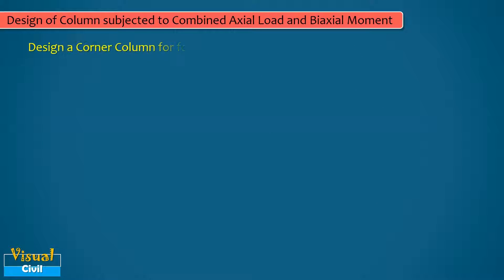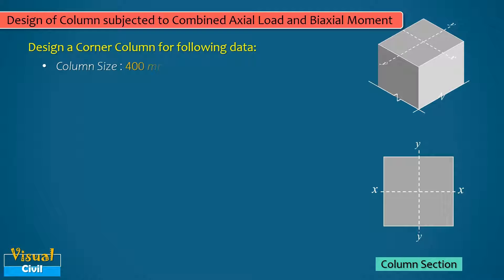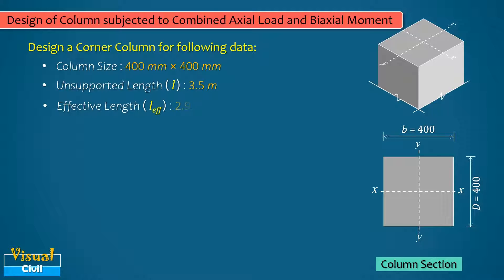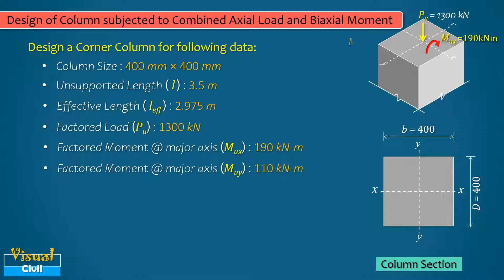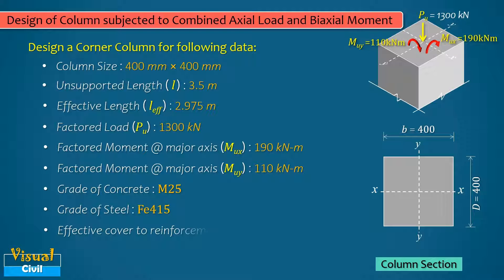Design a corner column of size 400 mm × 400 mm with an unsupported length of 3.5 m and effective length of 2.975 m. The column is subjected to a factored load of 1300 kN. It is also subjected to biaxial factored moments of 190 kNm and 110 kNm about the x and y axes respectively. The grade of concrete and steel are M25 and Fe415 respectively, with an effective cover to reinforcement of 60 mm.